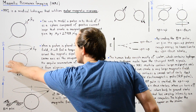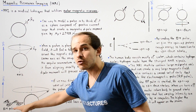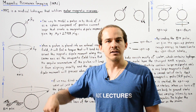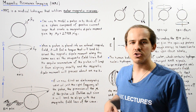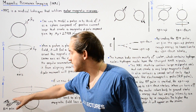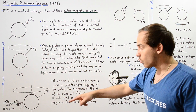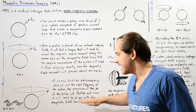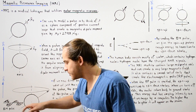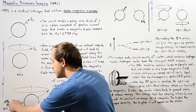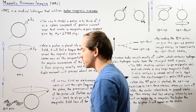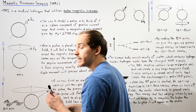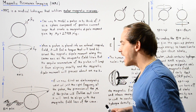Once the static magnetic field is on and the proton is precessing, suppose we direct an electromagnetic wave pulse at the proton. The electromagnetic wave carries an oscillating electric field and a perpendicular oscillating magnetic field. Focusing on just the alternating magnetic field, as it interacts with the precessing proton, it tends to flatten out the precession of the proton.